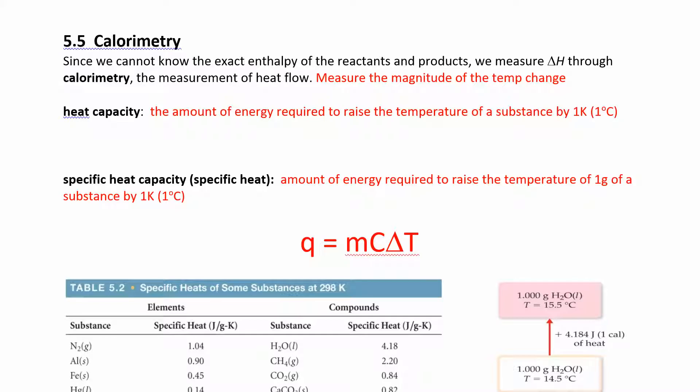Calorimetry. We're going to do a whole lab on calorimetry. Basically what we're doing is measuring the change in enthalpy by measuring the change in temperature, the magnitude of the change in temperature. Heat capacity is the amount of energy required to raise the temperature of a substance by one Kelvin or one degree Celsius. Remember that the change in temperature in Kelvin is the same as the change in temperature in Celsius.